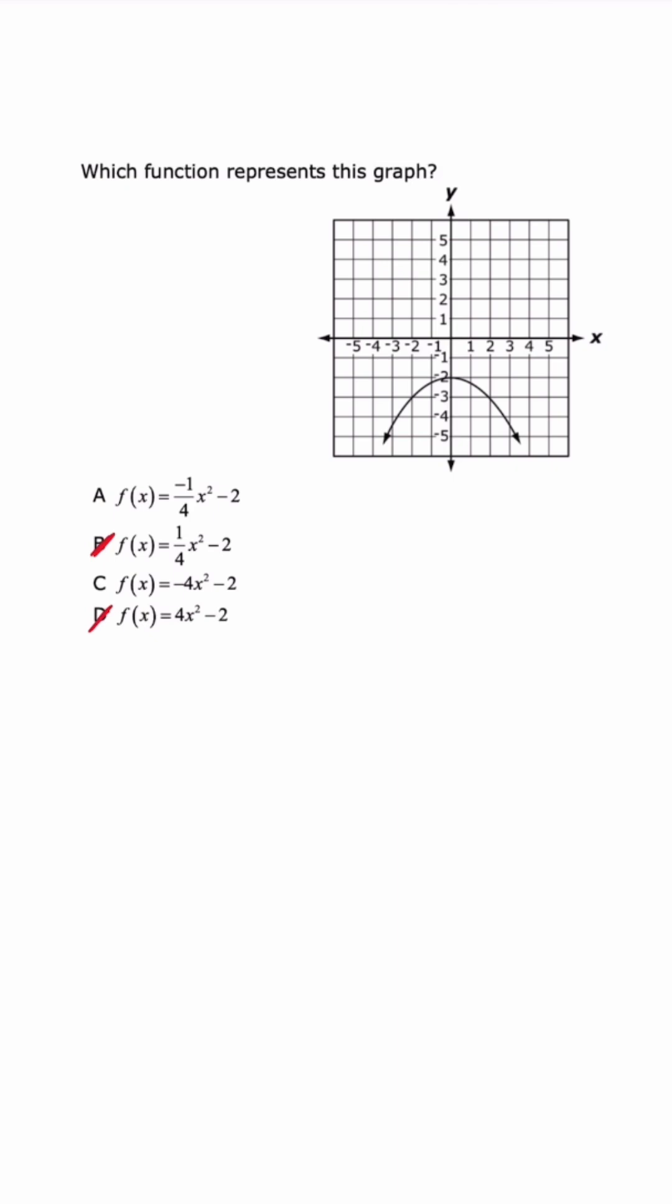Now, if you understand A, that lead coefficient and its transformation, if the A is larger than one, that means that the graph is going to open up more narrow compared to the parent function graph, Y equals x squared.